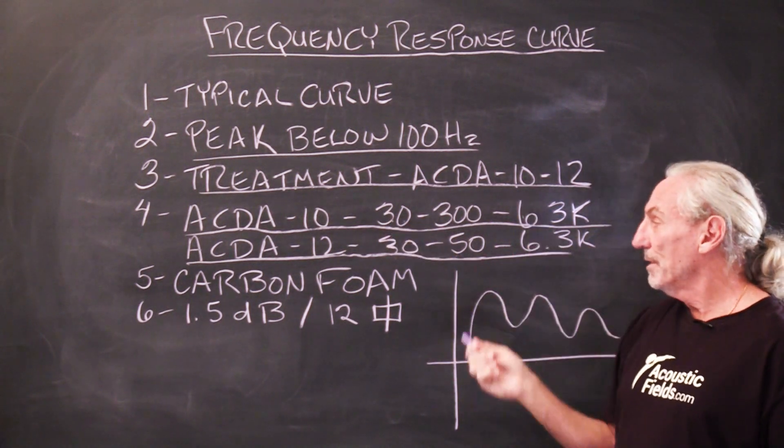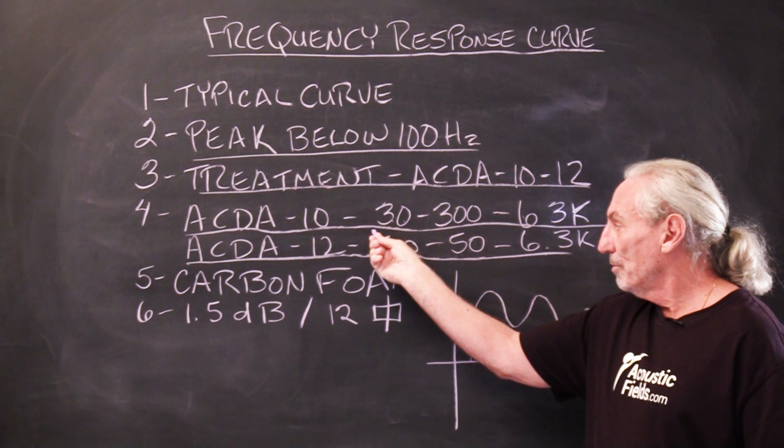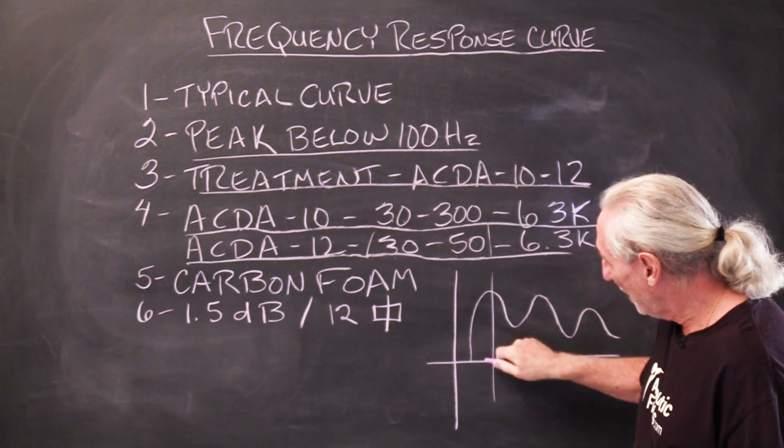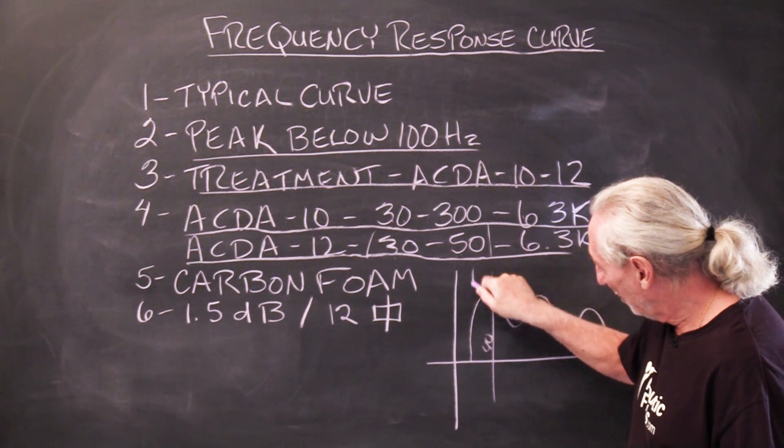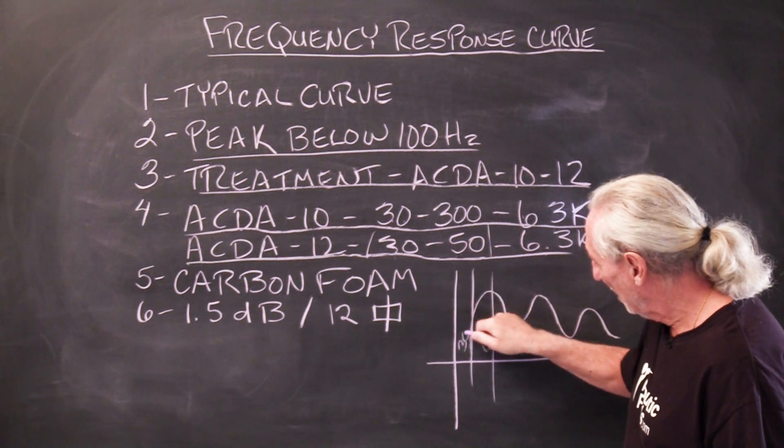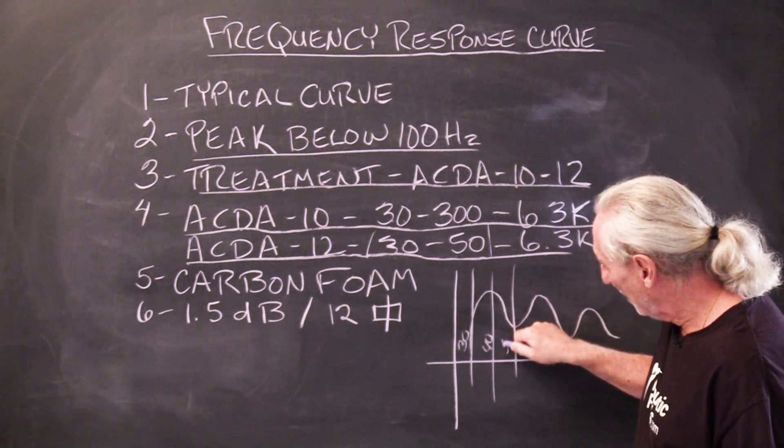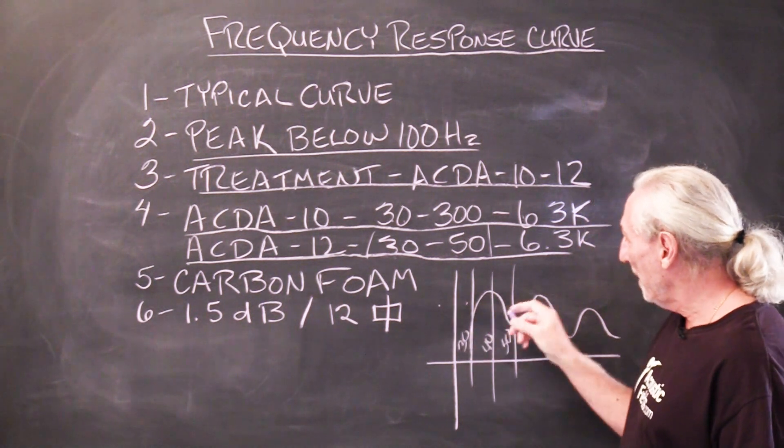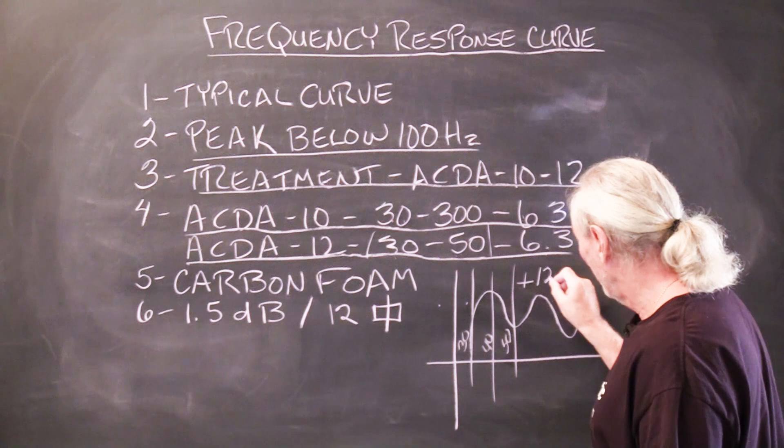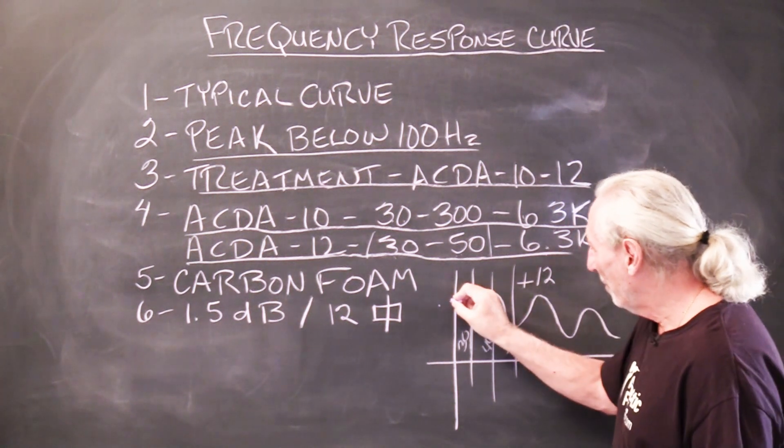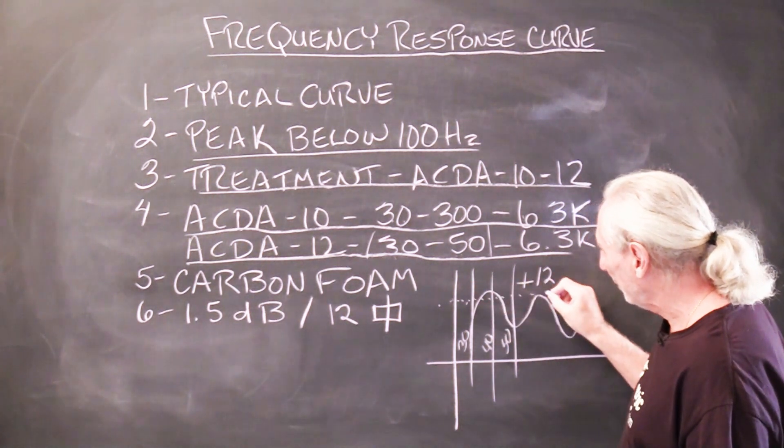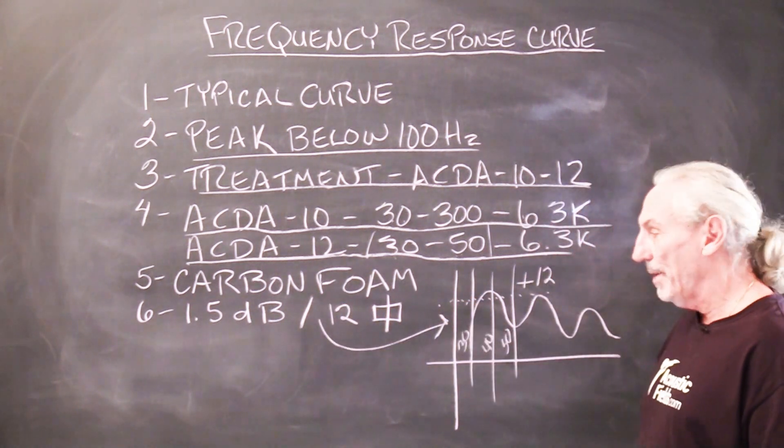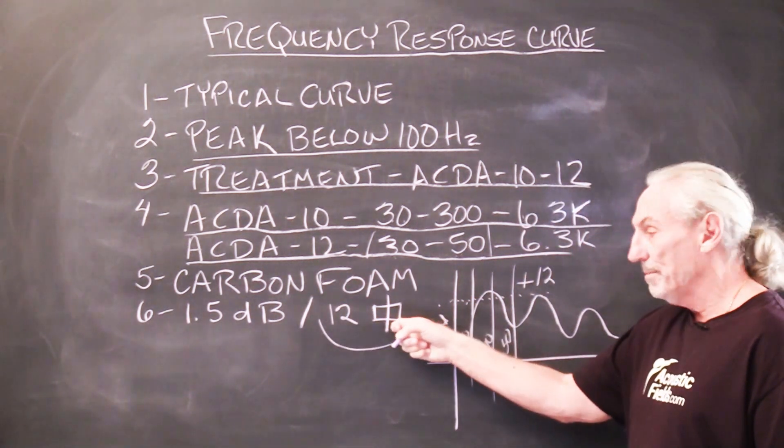But the 12 really goes after this 40 and 30 cycle energy and 50 cycle energy. Now how does it do that? Well, let's say this peak here is plus 12 dB. So we put one unit in the room at 1.5 dB attenuation for every square foot.